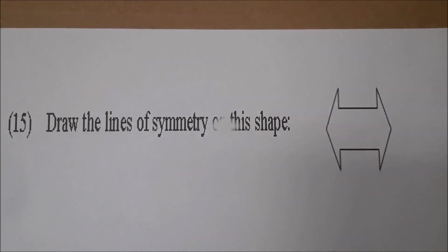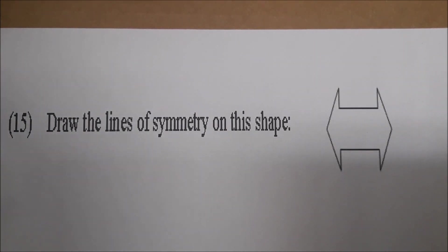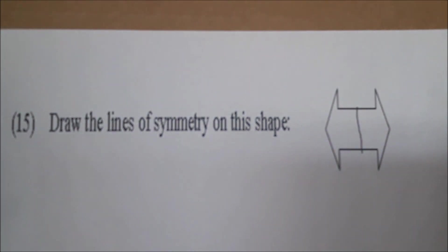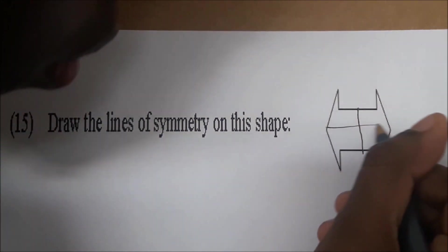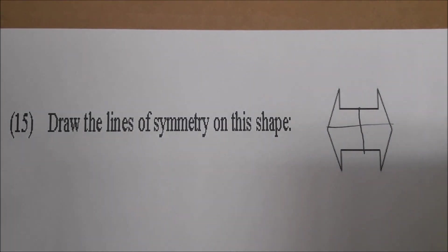Number fifteen, Sky. Draw the lines of symmetry of this shape. Draw the lines of symmetry on this shape. And it says lines. So it means we're drawing more than one. Go ahead, Sky. Let's see it. Let's see that one. That one divides it in half coming down. Go ahead. And that one will divide it in half going across. Very good job, Sky.